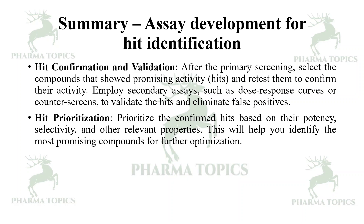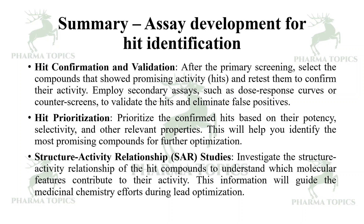For hit prioritization, prioritize the confirmed hits based on their potency, selectivity, and other relevant properties. This will help you identify the most promising compounds for further optimization. Then conduct structure-activity relationship (SAR) studies to investigate which molecular features of the hit compounds contribute to their activity. This information will guide medicinal chemistry efforts during lead optimization.